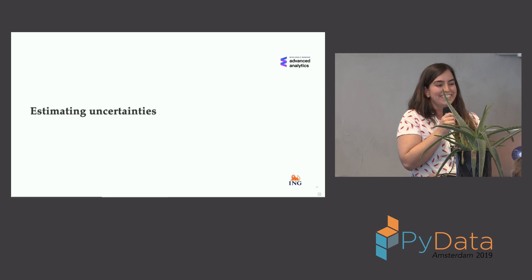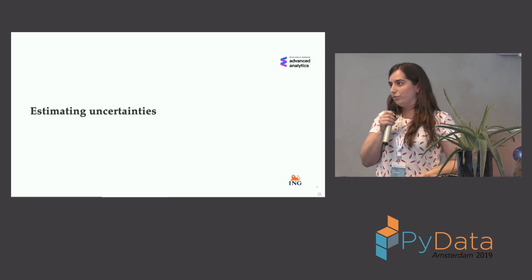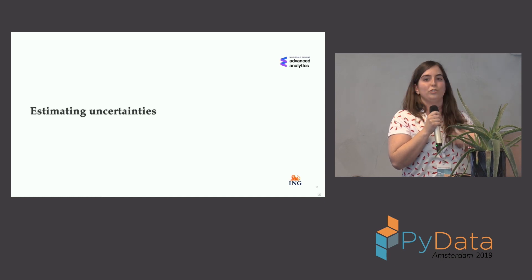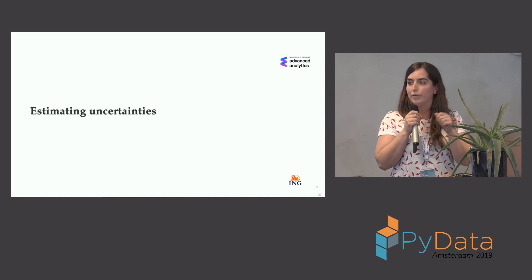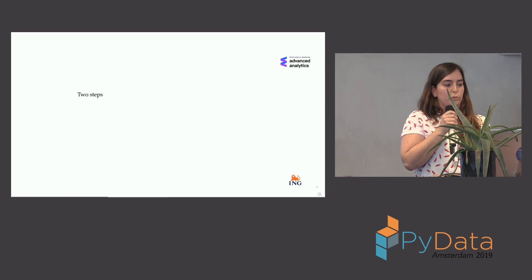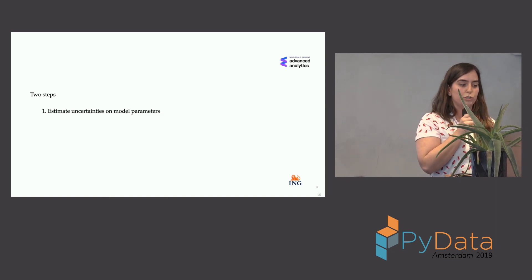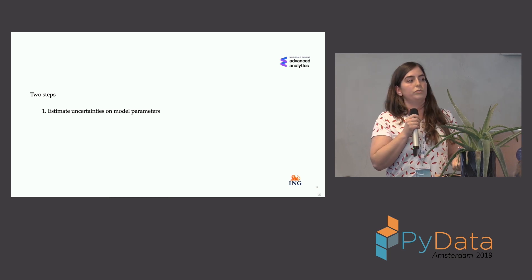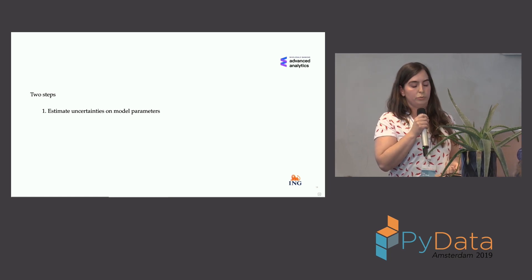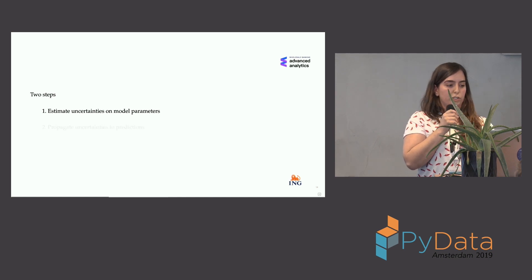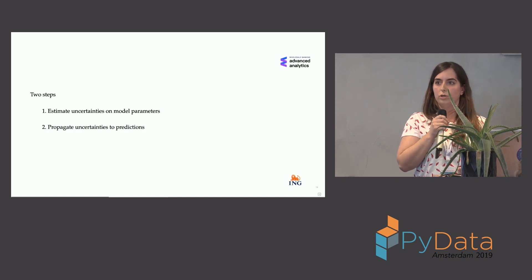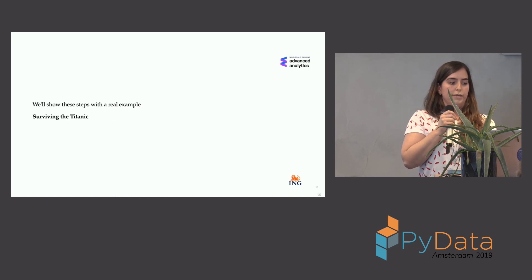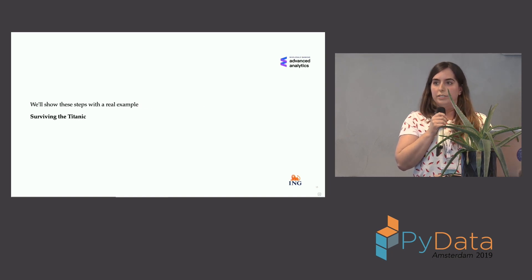So how do we then estimate these uncertainties without doing this a thousand times every time? We have two steps: first, we need to estimate the uncertainty in the model parameters; and once we've calculated uncertainty over these parameters, we need to propagate those uncertainties onto individual predictions.